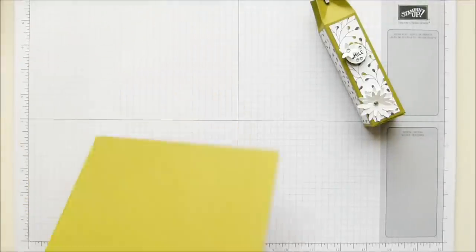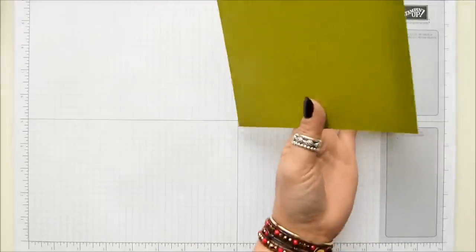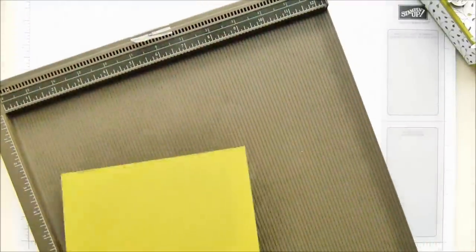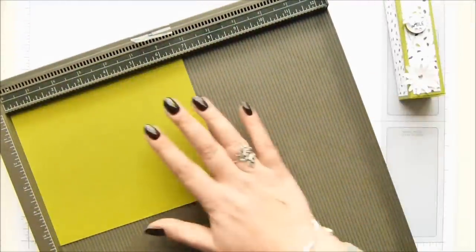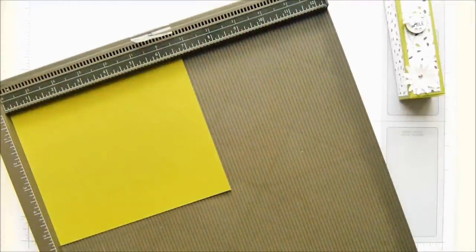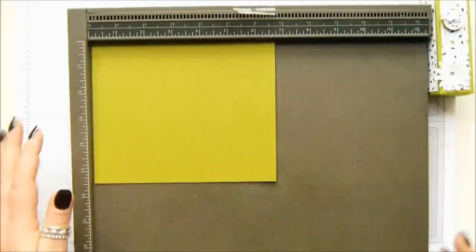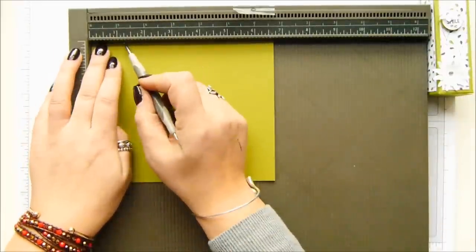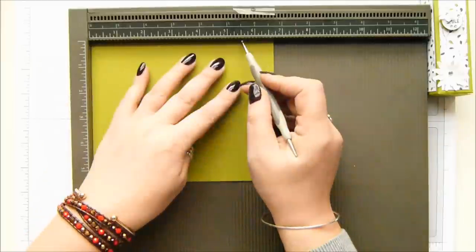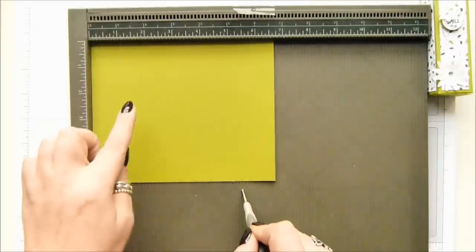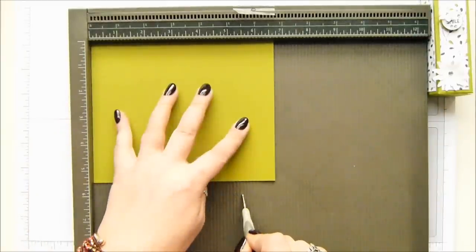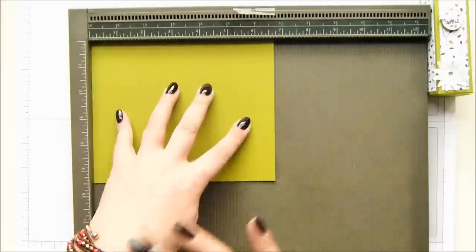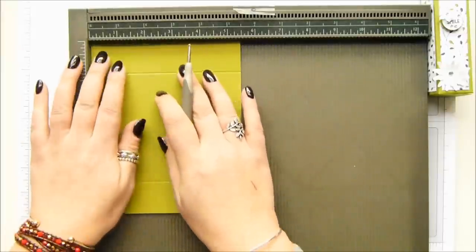Your piece of card measures six and three quarters by five and a half inches, which is 17.2 by 14 centimeters. On the long side up at the top, score it at one and a quarter and five and a half inches, which is 3.2 and 14 centimeters.